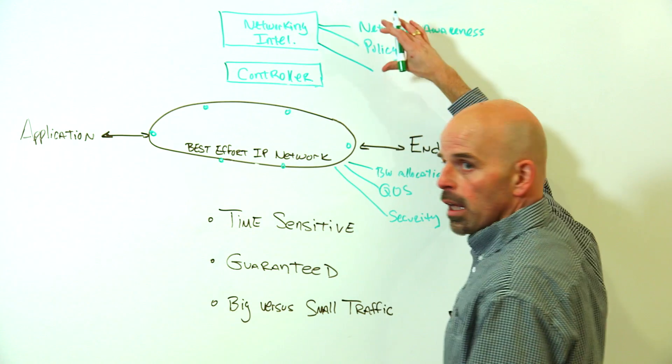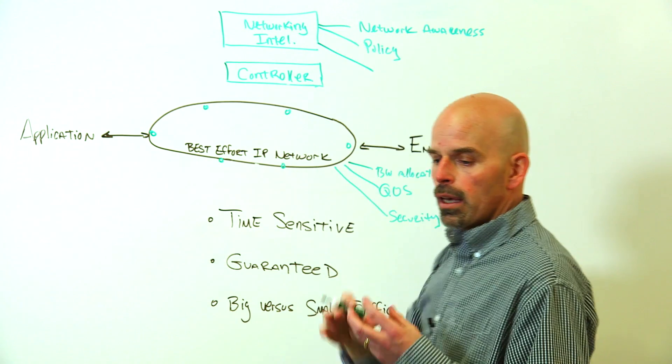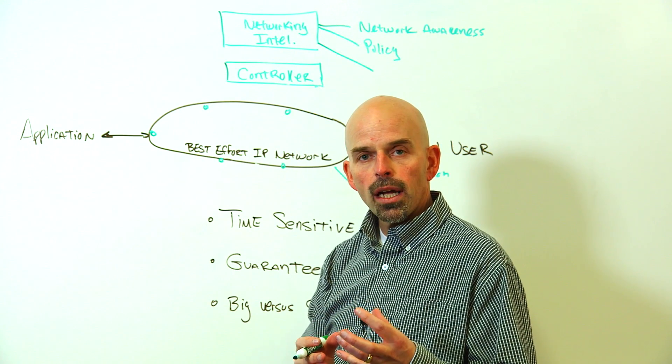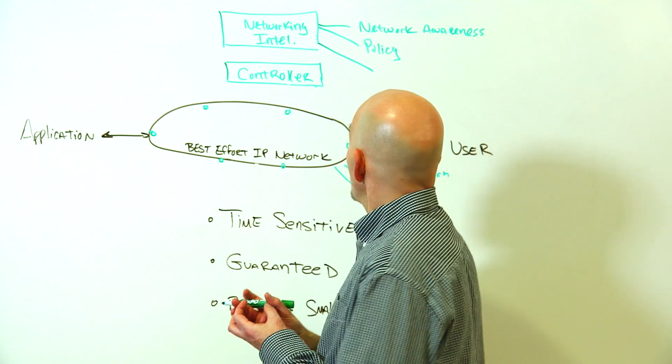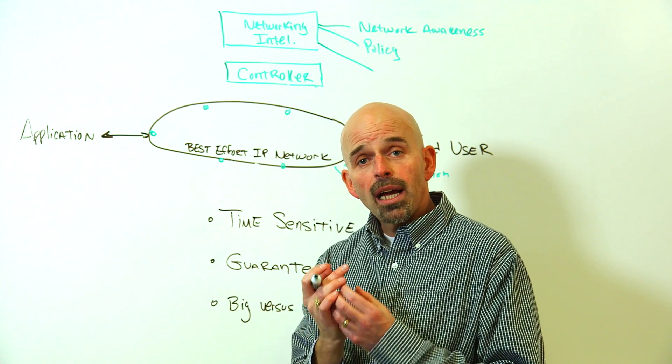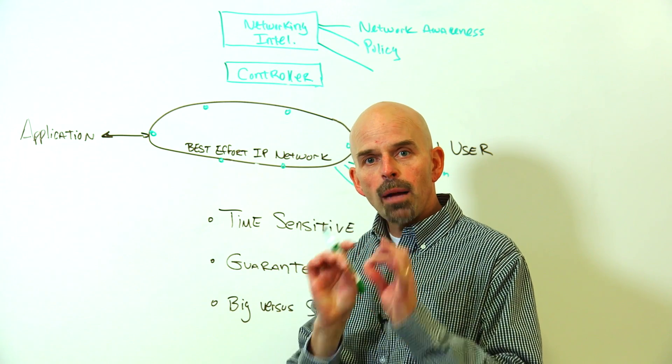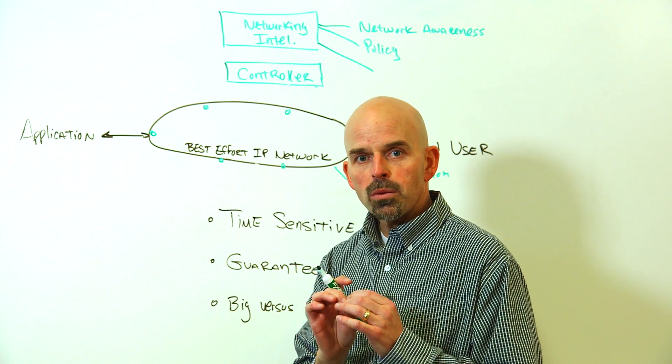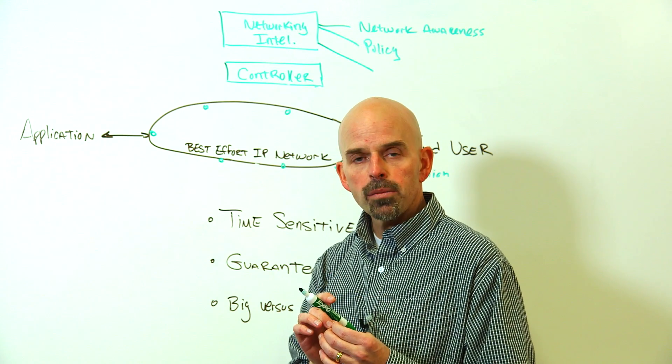Third is really a combination of these two, which is taking knowledge of the network at any given time and marrying that up with policy. Understanding what the applications are asking for to compute the optimal path through the network. So we call that path computation or path computation engine.